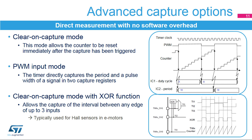The signal's rising edge is captured on input capture two to provide the period value with the clear-on-capture mode. The falling edge is captured by the capture one channel, which provides the pulse length duration. The duty cycle then simply corresponds to the ratio between input capture one and input capture two.